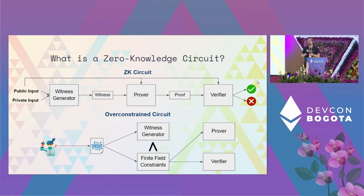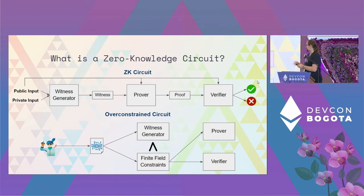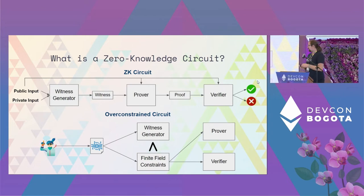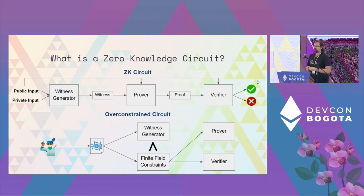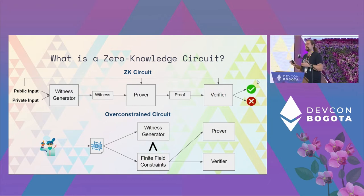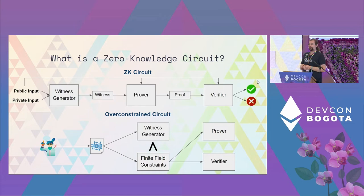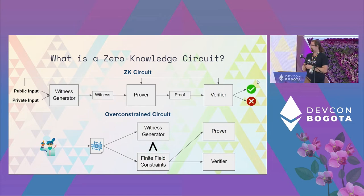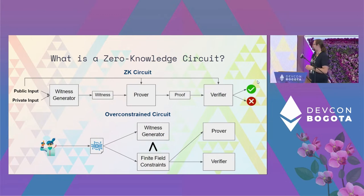With an under-constrained circuit, the constraints are more permissive than the witness itself. While the witness might be correct and provide all of the interactions you want, which are accepted by the constraints, an attacker could then come in and provide an alternative witness which might be used to get some alternative transaction or logic accepted by your constraints and then proven. This would necessarily be bad — for example, if a constraint equivalent to 'the sender is equal to the admin' didn't end up in your finite field constraints, someone could bypass that and bad things could happen.